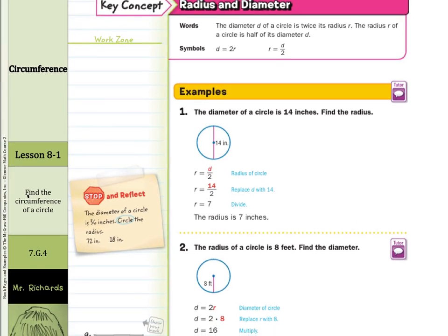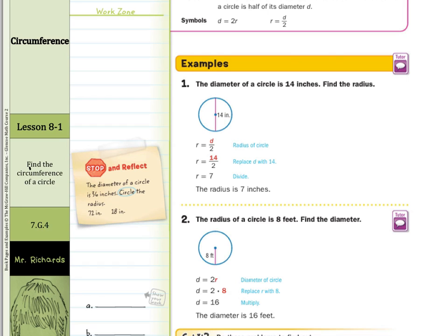The radius of a circle is 8 feet — find the diameter. We can use diameter equals 2 times r. So 2 times 8 is 16 feet. Stop and reflect: the diameter of a circle is 36 inches, circle the radius. The radius is equal to the diameter divided by 2, so the radius is going to equal 36 divided by 2, and the radius is going to be 18 inches.